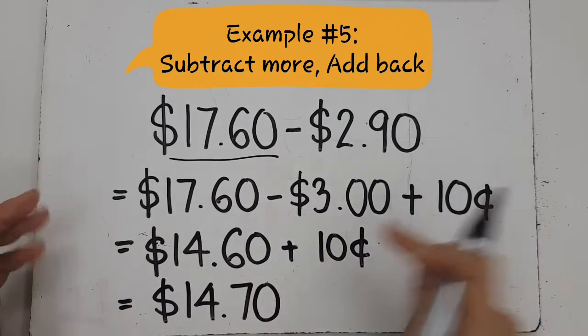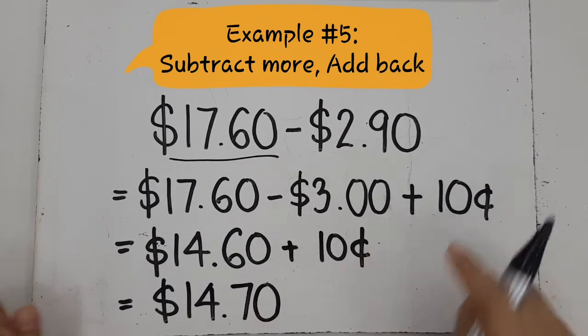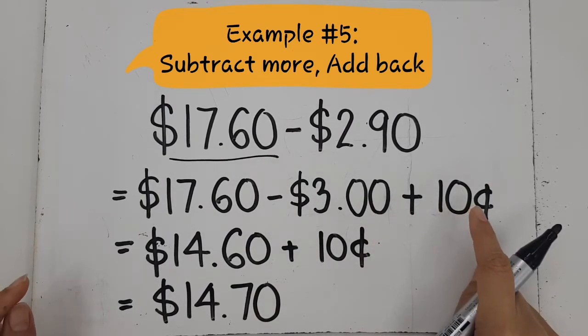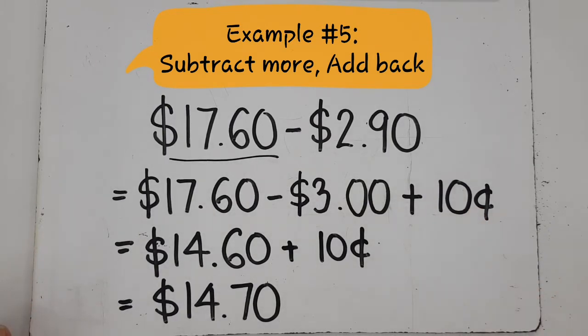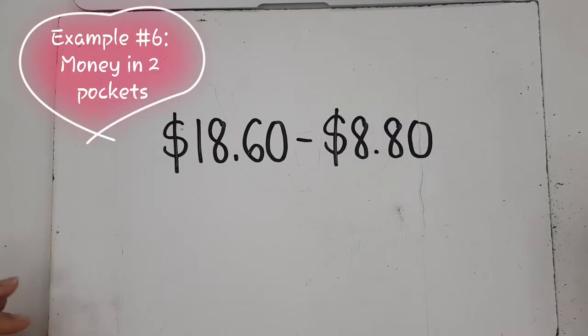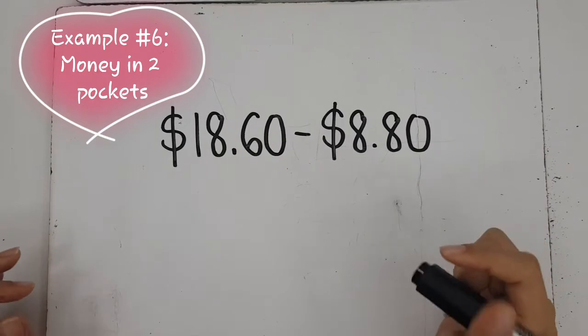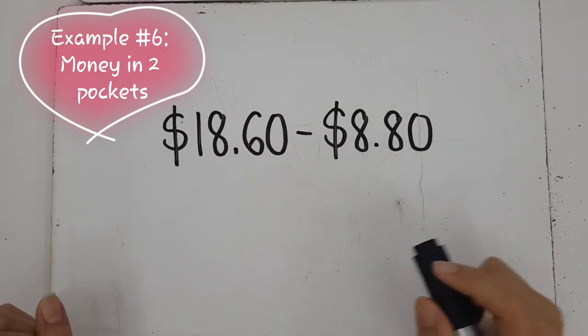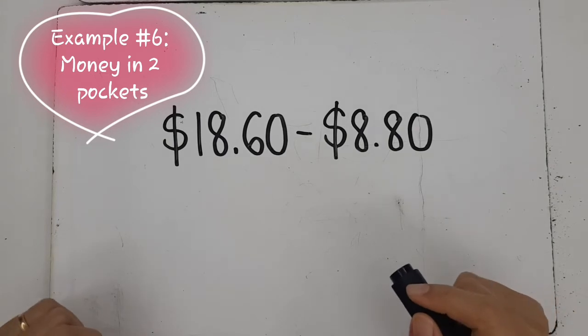So this method is called subtract more and add it back. We have to add it back so that we do not change the question. This is our next example. We have so many different methods to subtract. You have to figure out which one you like, but I am going to show you all the methods.